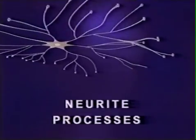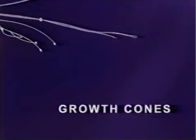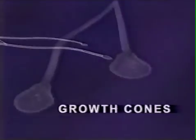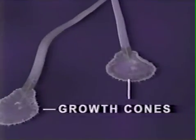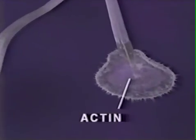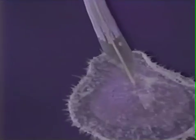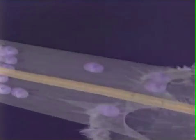At the end of each neurite is a growth cone where structural proteins are assembled to form the cell membrane. Two principal proteins involved in growth cone function are actin, which is responsible for the pulsating motion seen here, and tubulin, a major structural component of the neurite membrane.